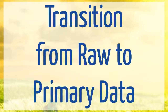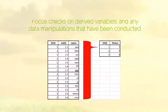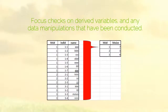At this stage you should focus your checks on any derived variables. These are new variables you create based on the raw data, such as calculating the yield in tonnes per hectare from the original yield data and plot size, and any data manipulations that have been conducted.